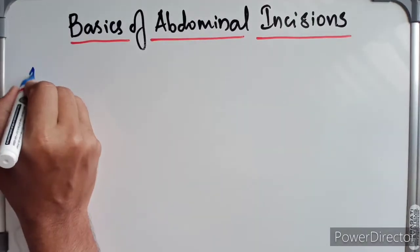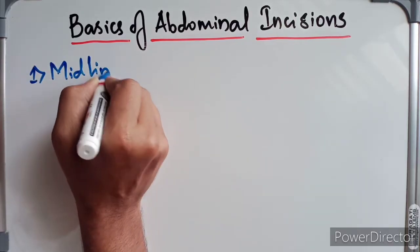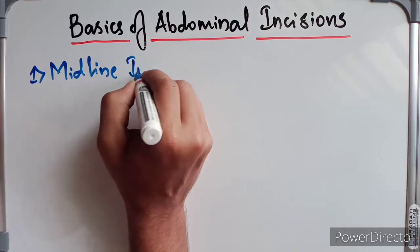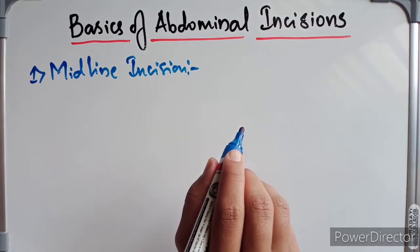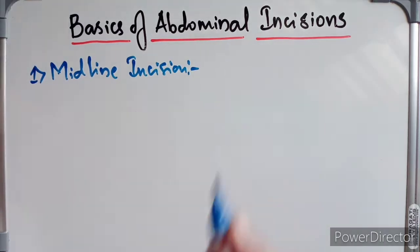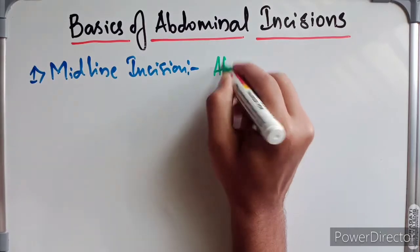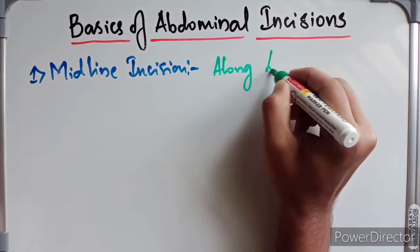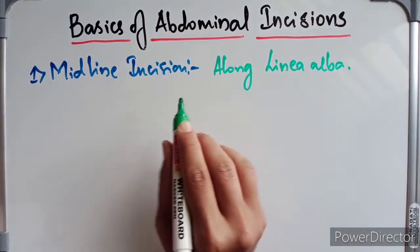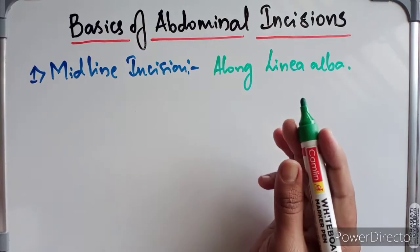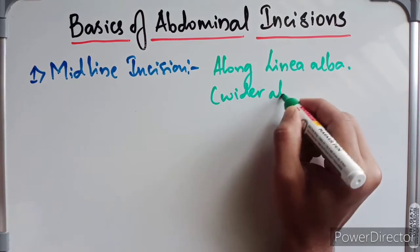Coming to the first one — the midline incision. This incision is given in the midline along the linea alba. It is easier to perform the incision above the umbilicus because it is wider in this region.